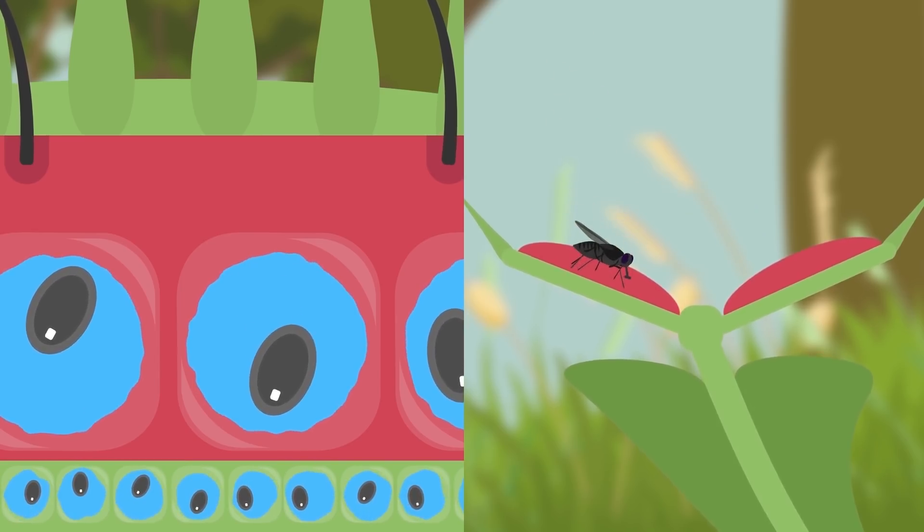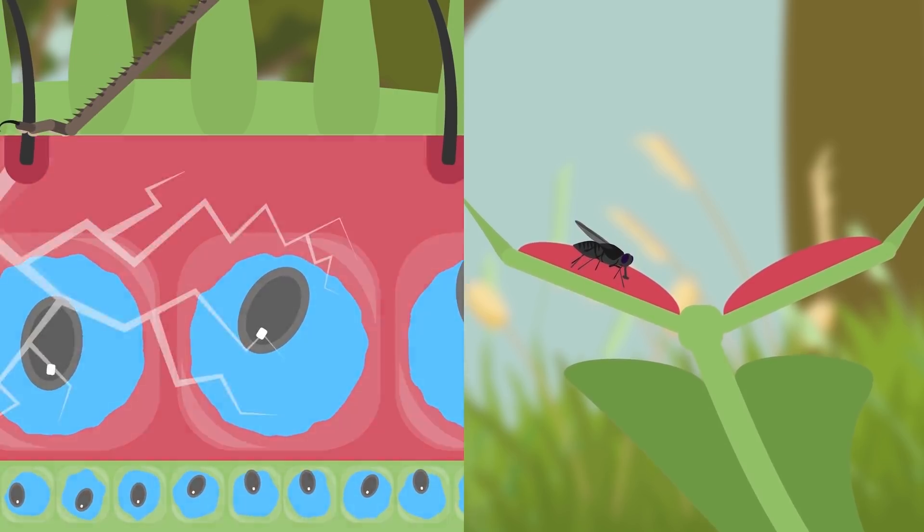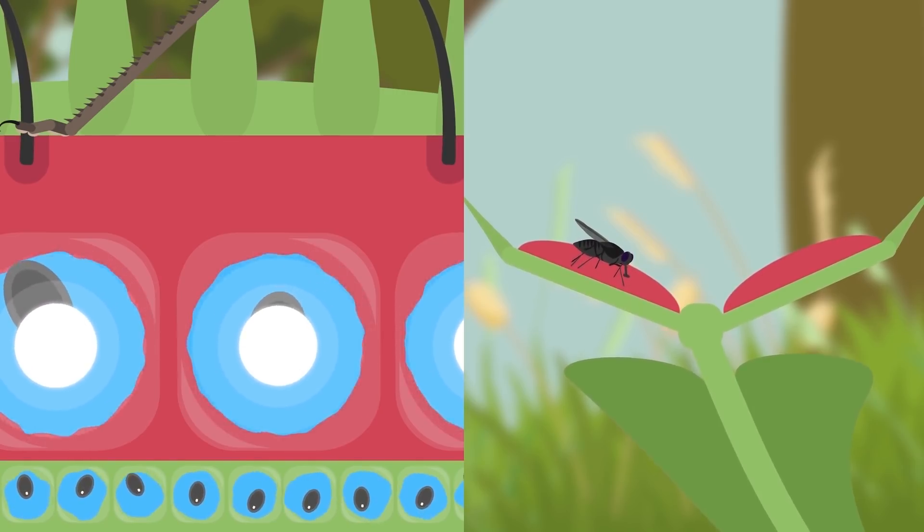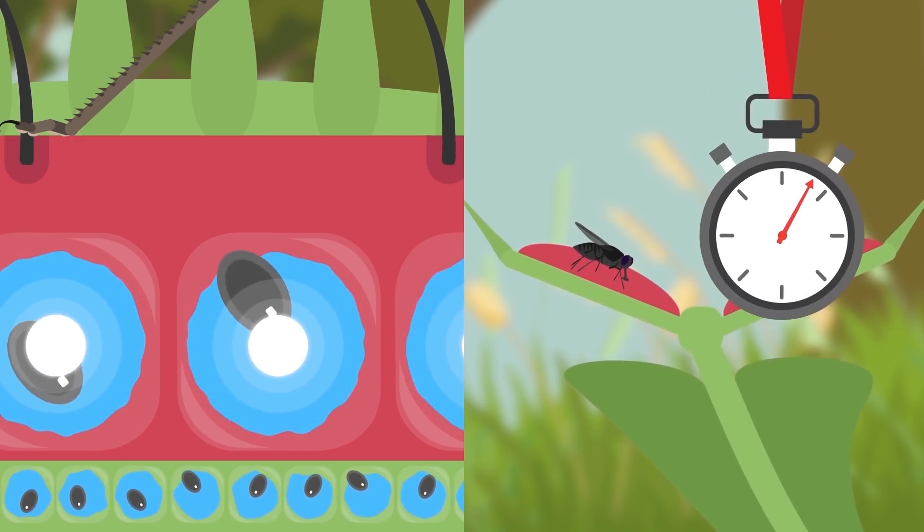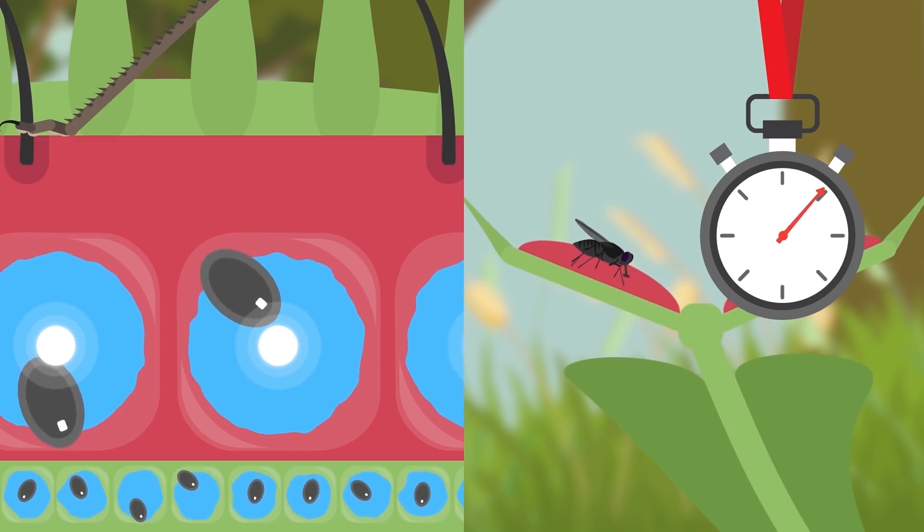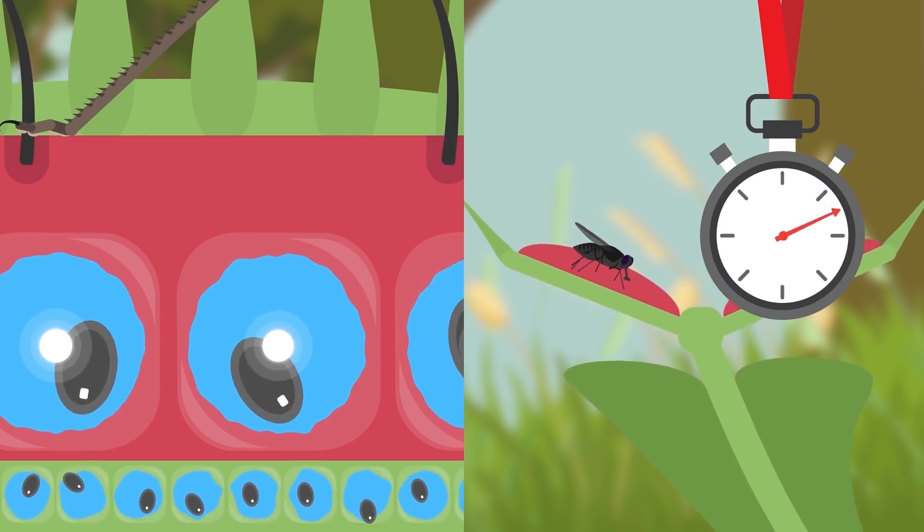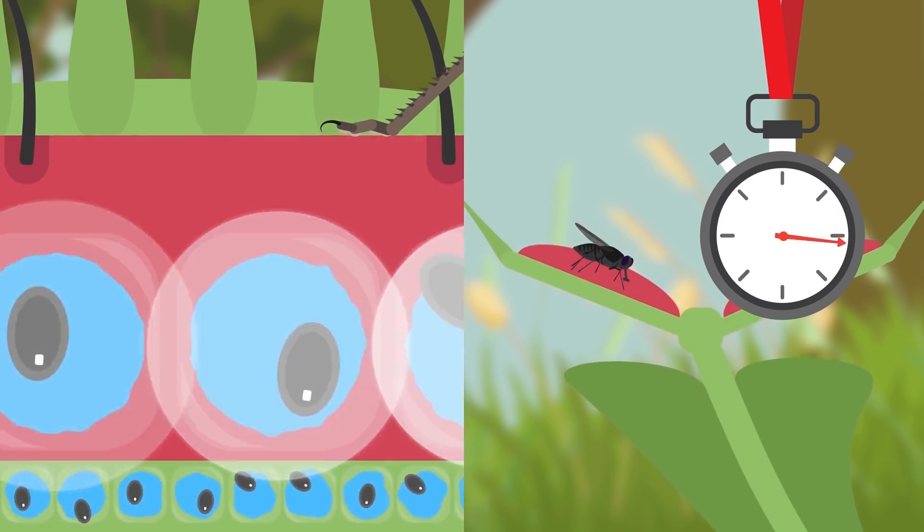Now, when an insect brushes against one of the sensitive hairs, the bending triggers a tiny electric charge. A charge that builds up inside the cells of the leaf, but that is not enough to stimulate the snap just yet. This electric charge will gradually decay over the next half a minute. So for the electrical signal to exceed the threshold value and close the trap, another trigger must occur within that time frame.